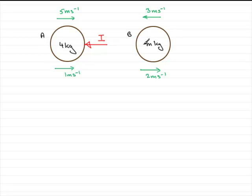And what we've got to do is we've got to find the mass of b. We've got to find out what m is. Now there's two ways that we could actually do this. And the quickest way is to consider the impulse.